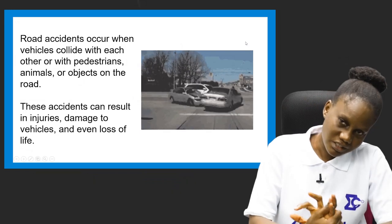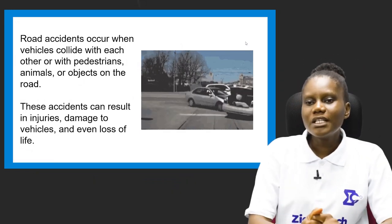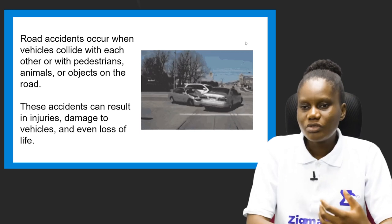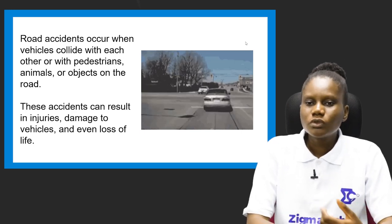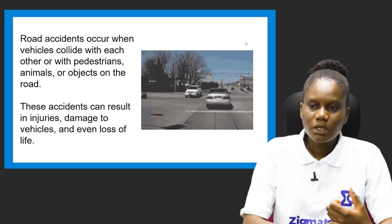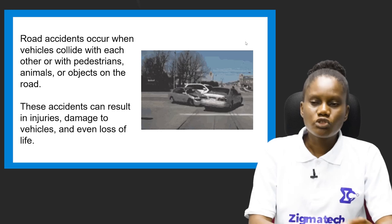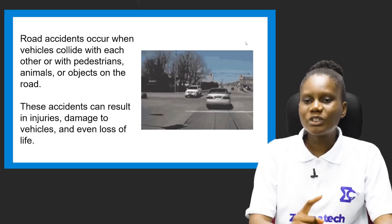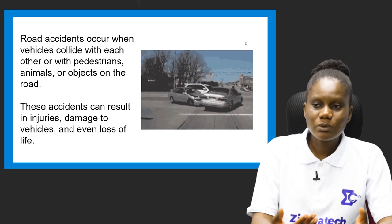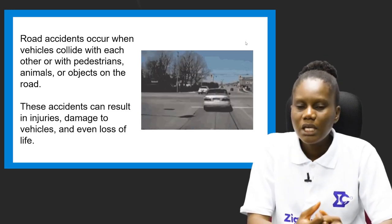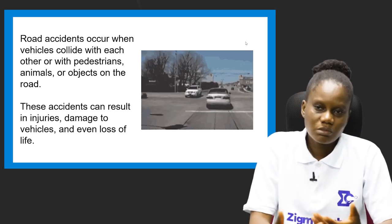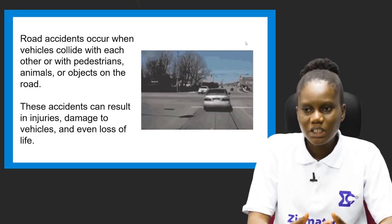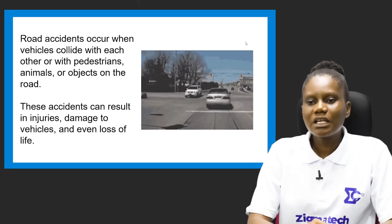Road accidents occur when vehicles collide with each other or with pedestrians, animals, or objects on the road. A vehicle can be a lorry, a car, or a trailer. Vehicles can collide with each other, with pedestrians — human users trekking on the road — with animals, or with objects such as buildings, poles, or trees.